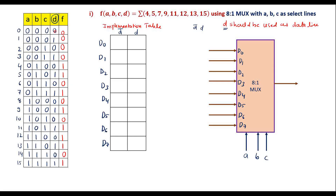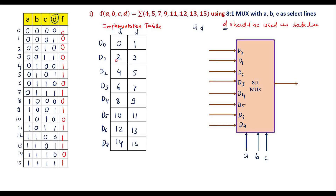For all even numbers (0, 2, 4, 6, 8, 10, 12, 14) the value of d is 0, and for odd numbers (1, 3, 5, 7, 9, 11, 13, 15) the value of d is 1. So wherever the d value is 0, we consider the d-bar column; if value is 1, we consider the d column. The d-bar column covers even numbers and the d column covers odd numbers, giving us the full range 0 to 15.